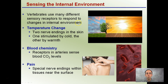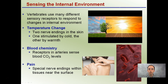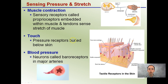Vertebrates use many different sensory receptors to respond to changes in the internal environment. For temperature, there are two nerve endings in the skin — one stimulated by cold, one by warmth, so one does not do temperature alone; one does hot and one does cold. For blood chemistry, receptors in our arteries sense blood carbon dioxide levels. Pain is detected by special nerve endings within tissue near the surface — an indication something is going wrong. Muscle contraction is sensed by proprioceptors embedded within the muscle and tendons. Touch pressure receptors are buried below the skin for tactile reception. Baroreceptors in major arteries sense blood pressure to either constrict or relax our arteries.